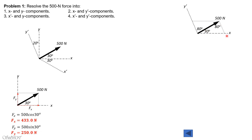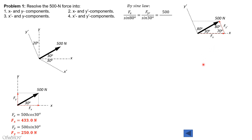In this triangle the angles sum to 180 degrees: with 80 and 30 already accounting for 110, the remaining angle must be 70 degrees. We use the law of sines to solve for Fx and Fy prime. By the sine rule: Fx over sin 80 equals Fy prime over sin 30 equals 500 over sin 70. So Fx equals 500 sin 80 divided by sin 70, giving Fx equal to 524.0 newtons, and Fy prime equals 500 sin 30 over sin 70, giving Fy prime equal to 266.0 newtons.